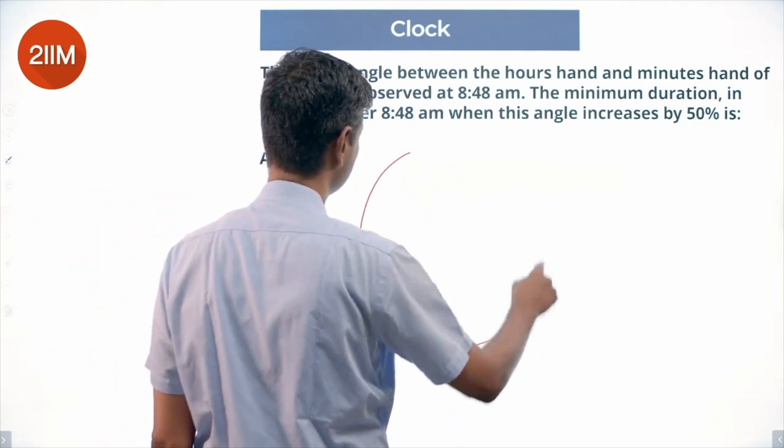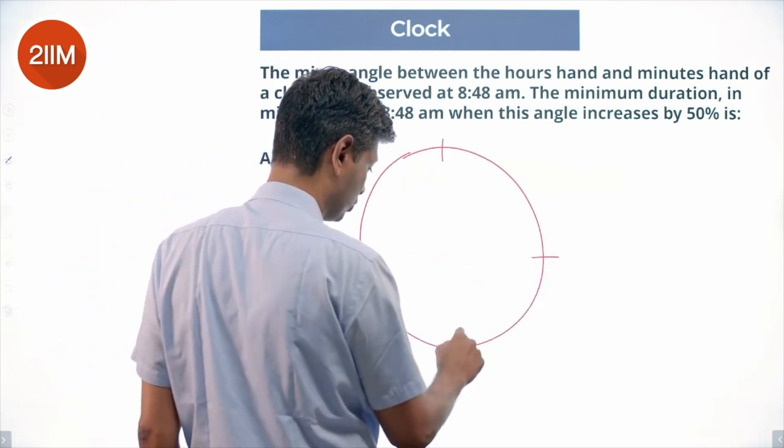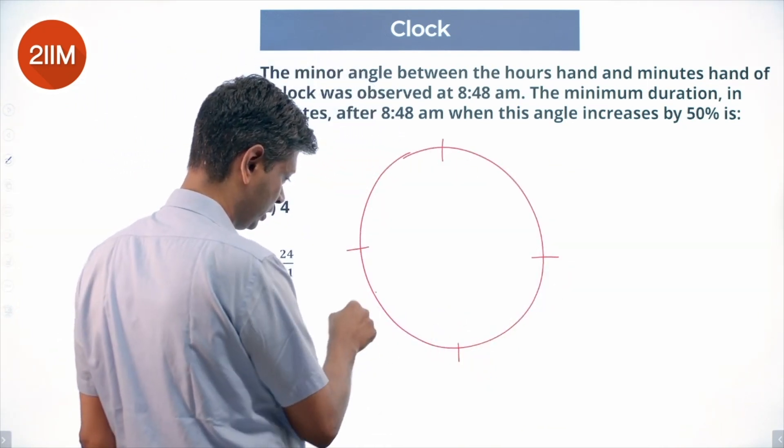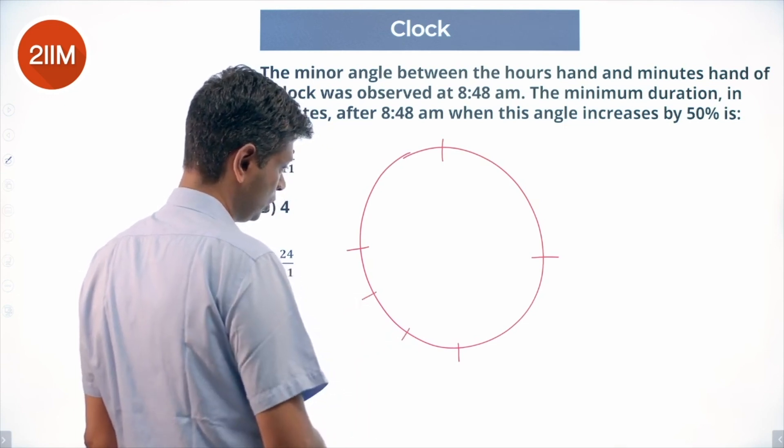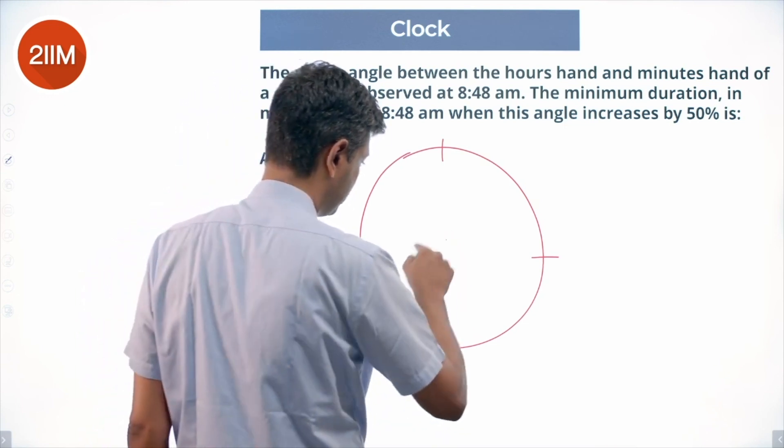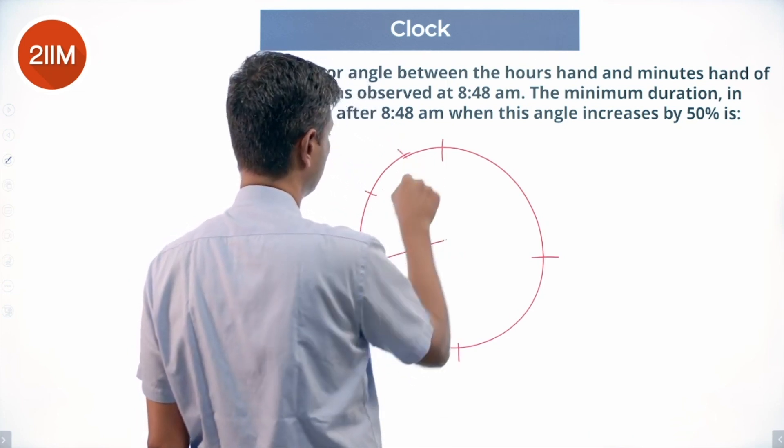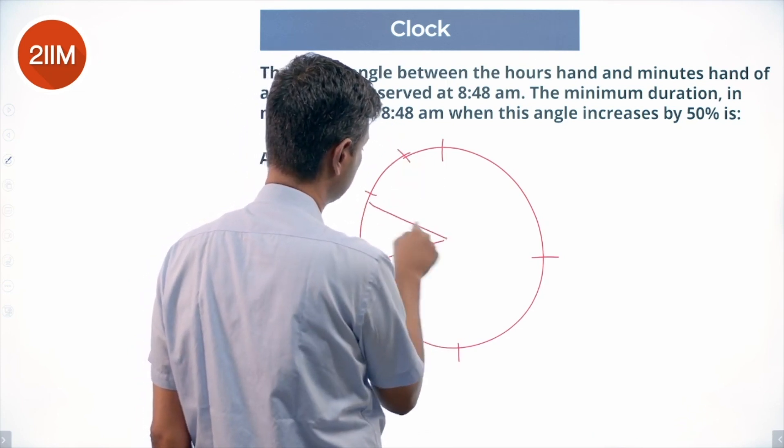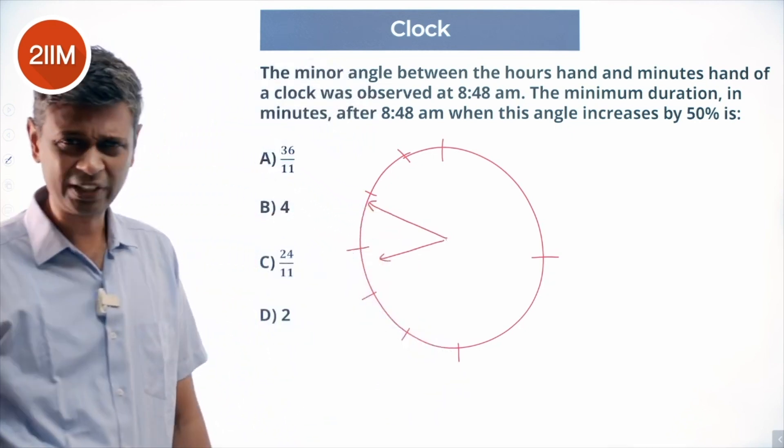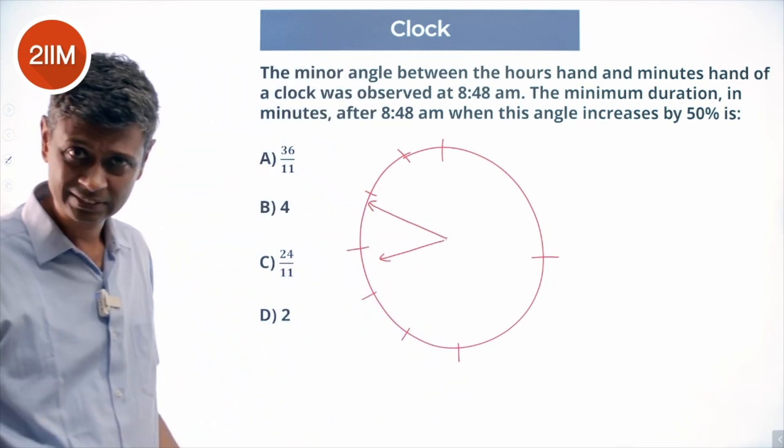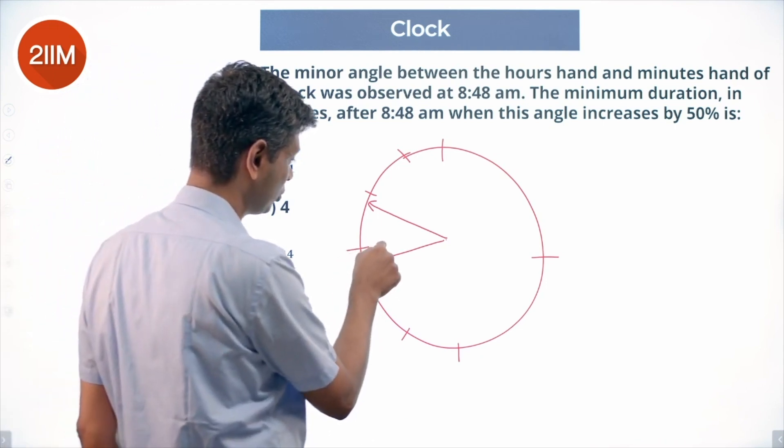Let us find 8:48 AM. 3, 6, 9, 8, 7... so the hour hand should be somewhere here, and the minute hand should be somewhere here. So let us first find out what the angle is, and we take this as the reference point.